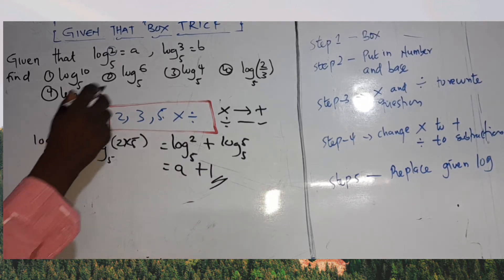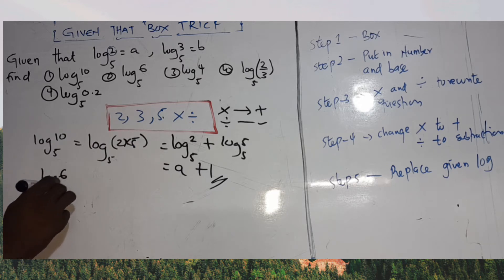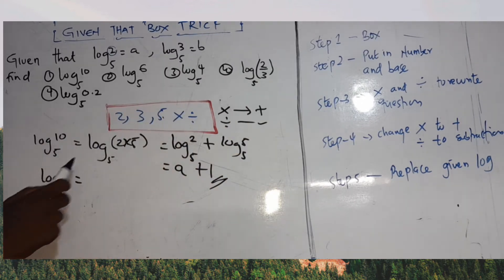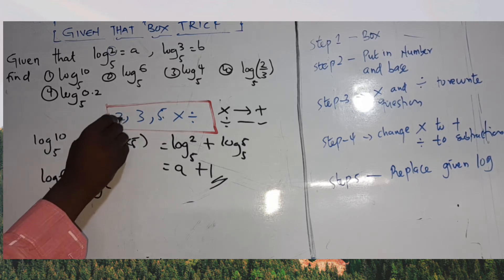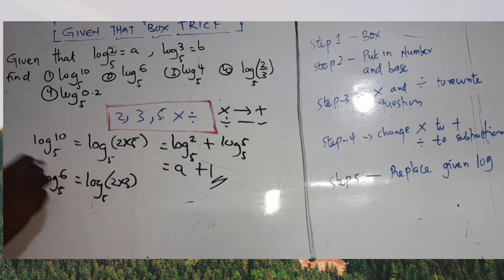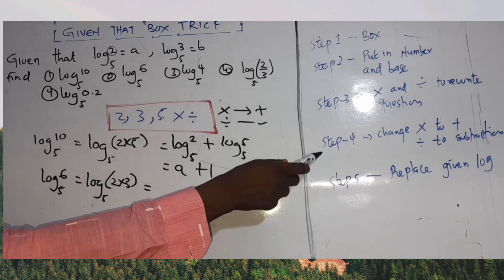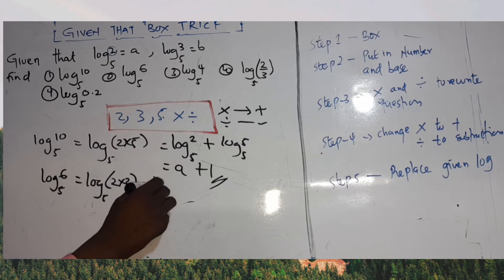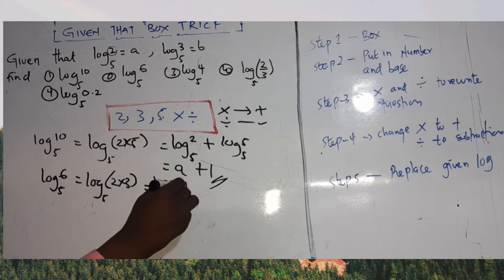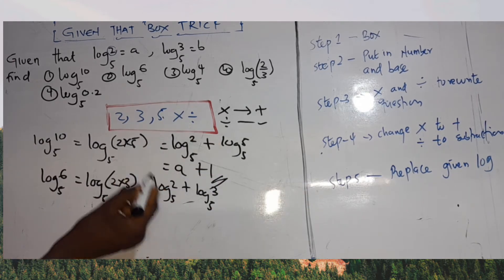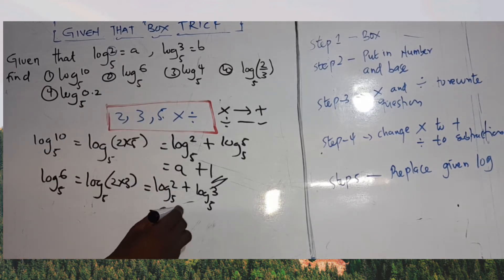Second question: log base 5 of 6. I rewrite 6 using numbers in the box: 2 times 3 equals 6, so log base 5 of (2 × 3). Changing the multiplication to addition gives log base 5 of 2 plus log base 5 of 3. Step 5: log base 5 of 2 is a, and log base 5 of 3 is b. Final answer: a + b.